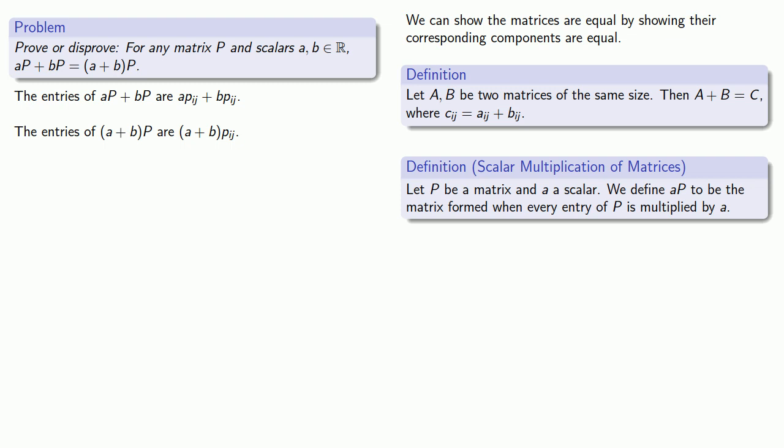And we take a look at our entries. The entries of the matrix aP + bP are going to be ap_ij + bp_ij. Meanwhile, the entries of the matrix (a + b) times P are going to be (a + b) times p_ij. And since these are equal, then the entries of the two matrices are equal, and so the matrices themselves are equal. And so we have proven that we have this right distributivity.